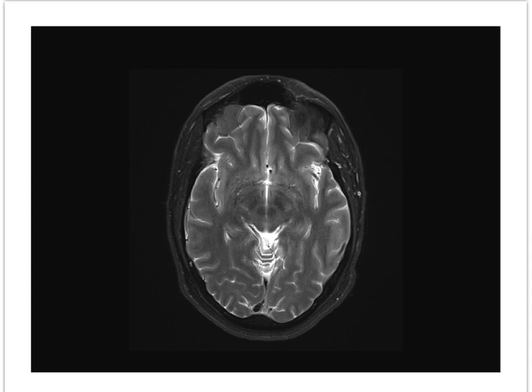This image is at the level of the quadrigeminal plate cistern at the superior colliculus level. At this level we can see the paired dark structures which represent the red nuclei, and the adjacent dark structures more anteriorly and laterally are the substantia nigra.